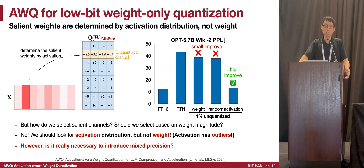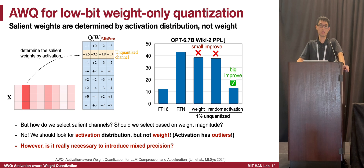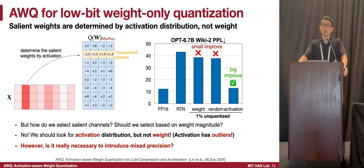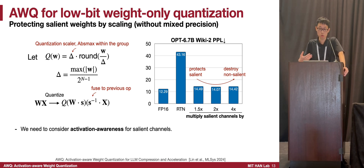Another question is whether it is really necessary to design mixed-precision methods for both algorithms and systems, since mixed precision inevitably introduces complexity — you have to design kernel splitting for FP16 computation and integer multiplications. Fortunately, the answer is yes, we do have a way to avoid mixed precision.